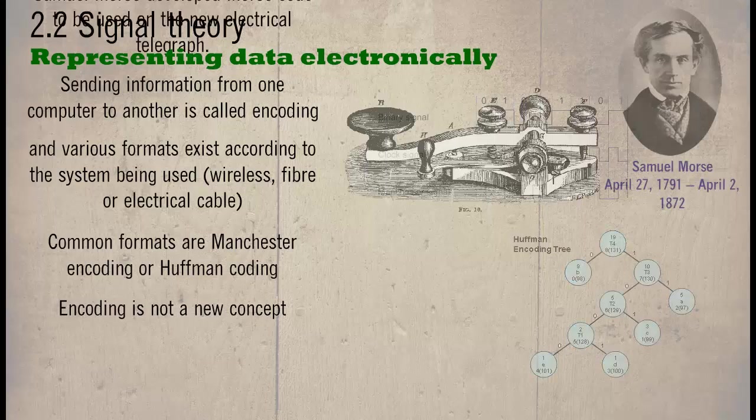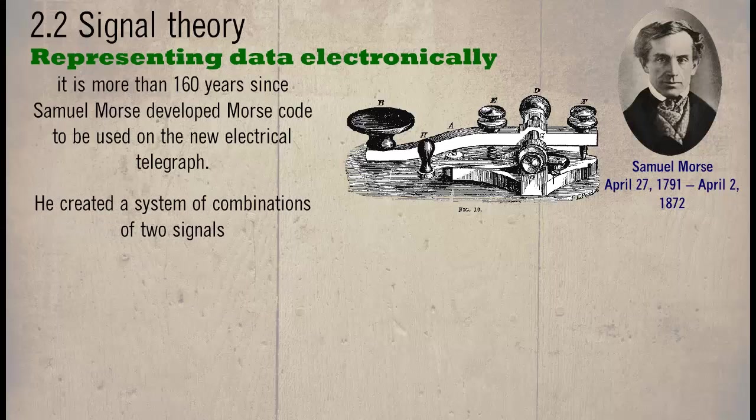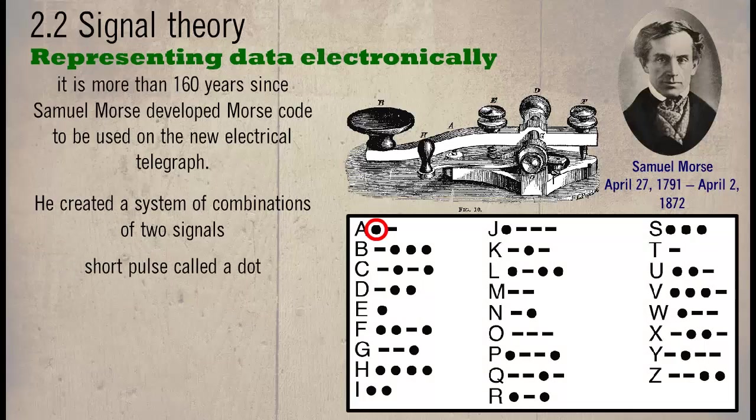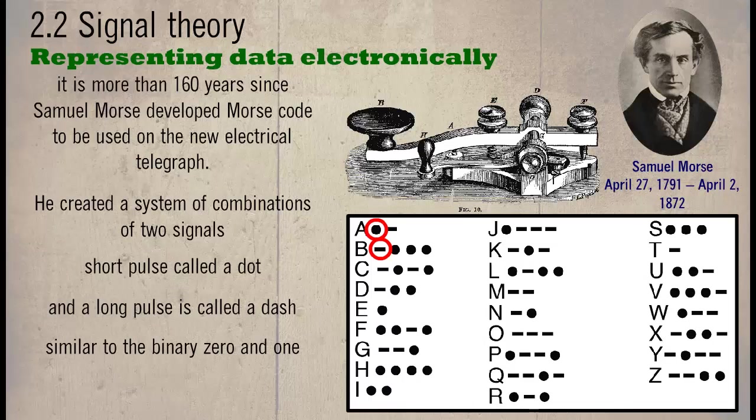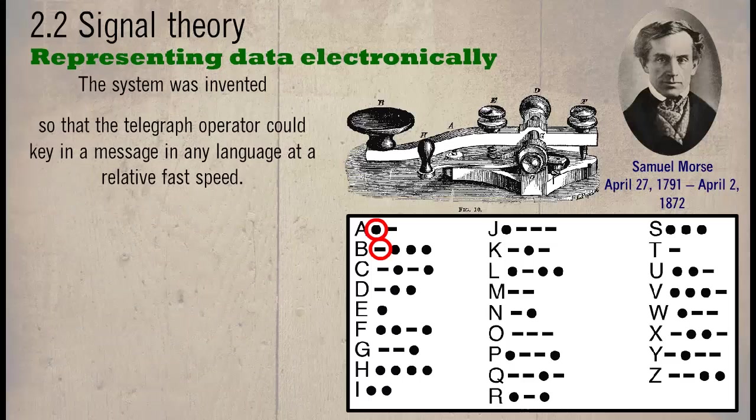Encoding is not a new concept. It is more than 160 years since Samuel Morse developed Morse code to be used on the new electrical telegraph. He created a system of combinations of two signals: a short pulse called a dot and a long pulse called a dash. The system was invented so that the telegraph operator could key in a message in any language at a relatively fast speed.